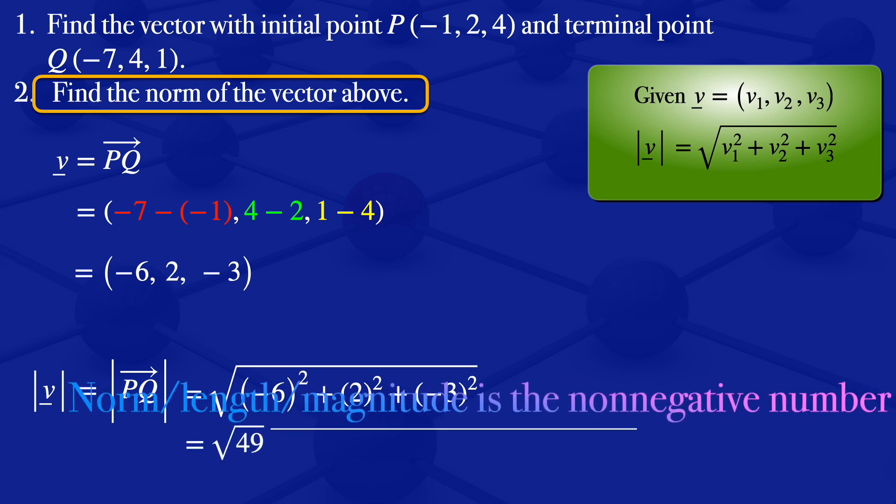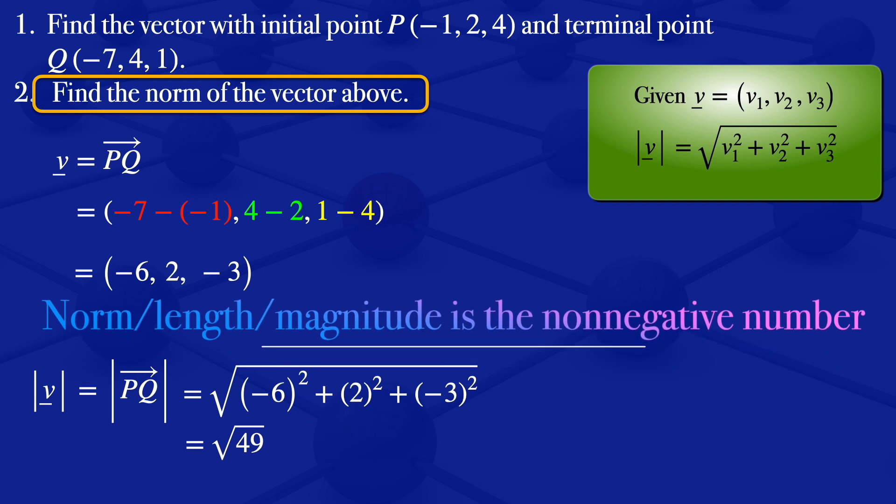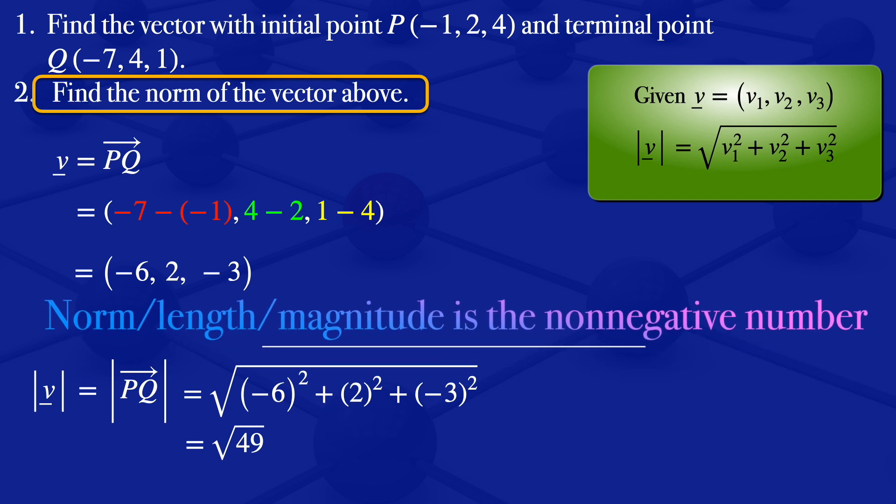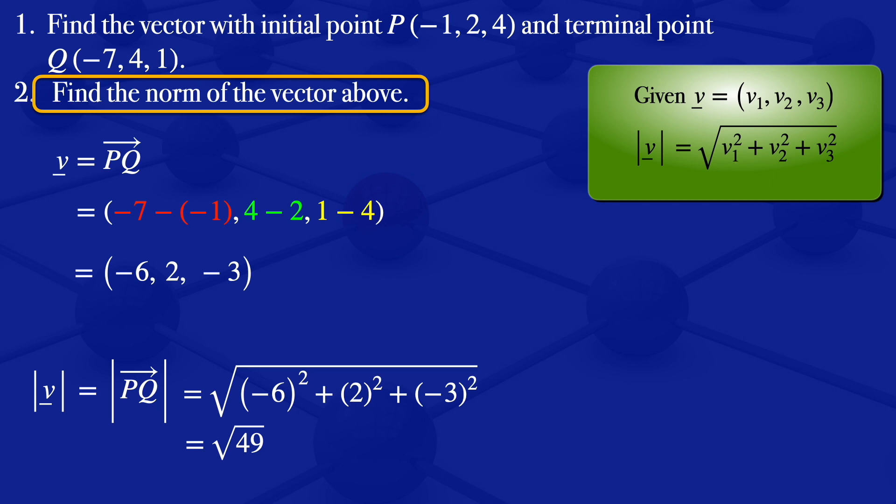We know that the norm of a vector is a non-negative number, so when you take the square root we just take the non-negative result. The non-negative result is 7, so we have the norm of the vector v is 7.